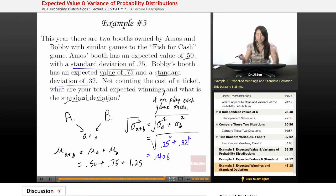0.406. So that is our new standard deviation. It is larger than either of them alone. And that makes sense, because we're increasing variance, because we're adding things together.